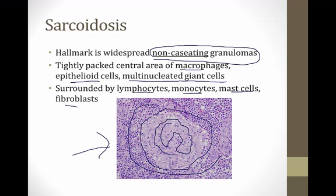In this example, there are cells and nuclei packed together without a lot of necrotic tissue, and that means it's non-caseating. Generally, especially in board questions, non-caseating means sarcoidosis, whereas caseating means TB.